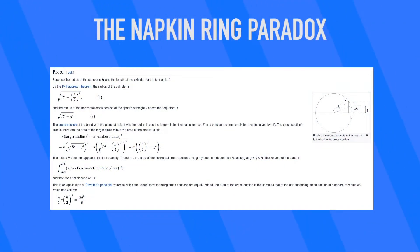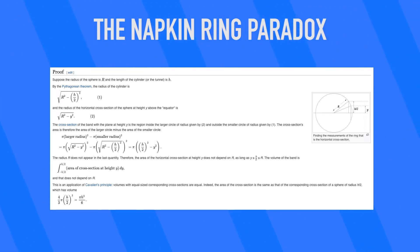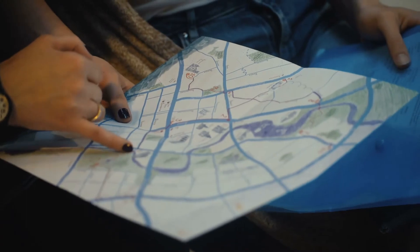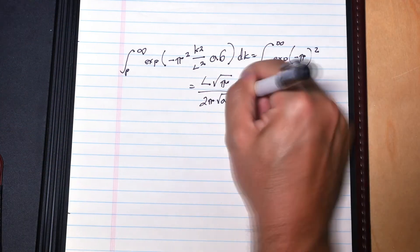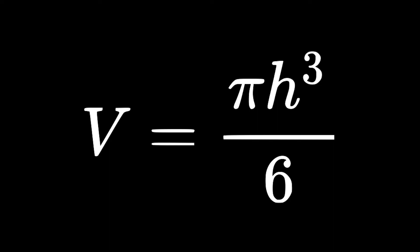In order to find the volume of each napkin ring, you have to formulate some equations that use the area of a circle, a little geometry, and the Pythagorean theorem. After going through all of the math, you're left with an equation that looks like this: V equals pi times h cubed over 6. To solve for the volume of a napkin ring, all you need is the height of the napkin ring — there is no radius or diameter in that equation.